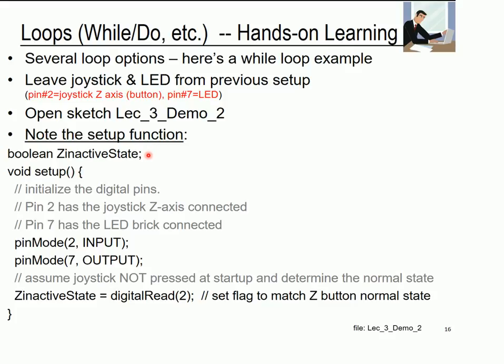Before the setup function, we are declaring a variable called Z inactive state. Z implies the Z button or the joystick button that's on pin 2. We want to know what the inactive state is. That means when the button is not pressed, what is the state? We've declared this Boolean variable, which is a place to store that initial state of the push button.